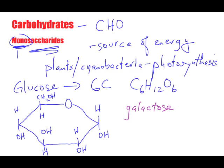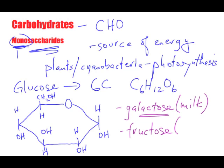Other six-carbon monosaccharides you may come across include galactose — and you can almost figure out from the word 'lactose' where this sugar is found. If you thought milk, yes, you're correct. The other simple sugar is called fructose, which is the sugar found in fruits. Of the three monosaccharides, fructose is probably the sweetest — even sweeter than glucose.